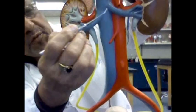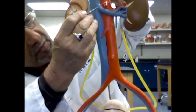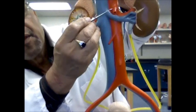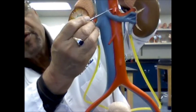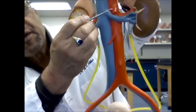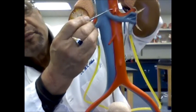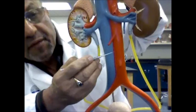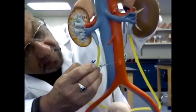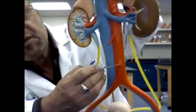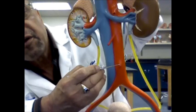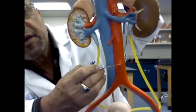This blood vessel is the superior mesenteric artery. This blood vessel is the inferior mesenteric artery.